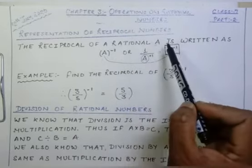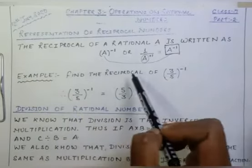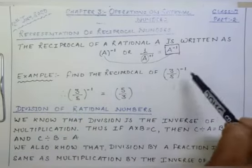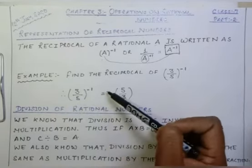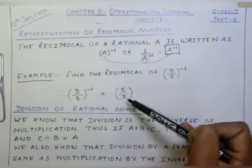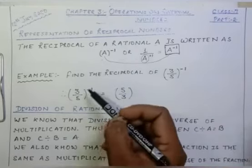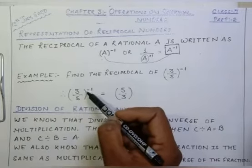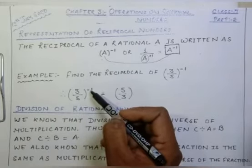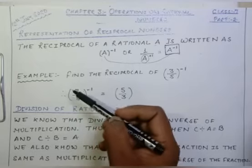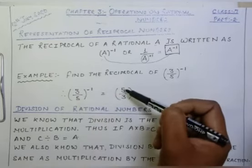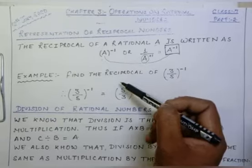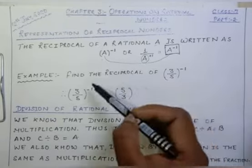I hope this much is clear to everyone. Let us take an example: find the reciprocal of 3 upon 5 to the whole power minus 1. Here, 3 upon 5 to the whole power minus 1 can be written as 5 upon 3. Simply, when any rational number has a power of minus 1, the number at the numerator place takes the place of denominator and the number at the denominator place takes the place of numerator. Hence the number is being reciprocal.